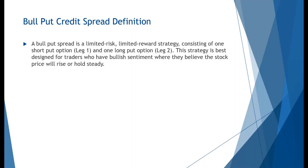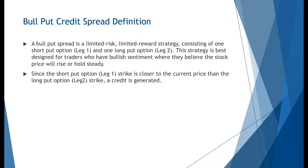So what is a bull put credit spread? It's a vertical option spread where we're going to sell a put option — we'll call that leg one — and then we're going to buy another put, leg two. The strategy itself is designed for traders who have a bullish sentiment. They believe that the stock price is going to go up, or as long as it doesn't go down, we could still profit from a market that holds steady. Since we're selling the first leg closer to current price and purchasing another put farther away, this action generates a credit.